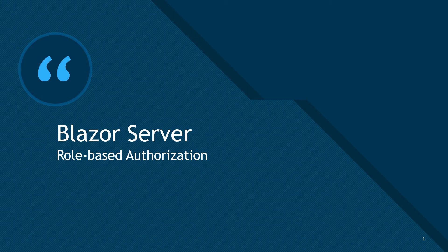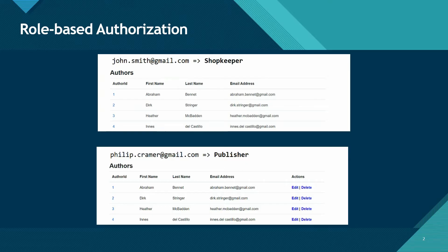In this episode I'm going to talk about role-based authorization in your Blazor server application. For the demo I'm going to use the bookstore application that we have been working on. In the bookstore application we have this authors page where people who are logging into the system can edit and delete authors from the system.